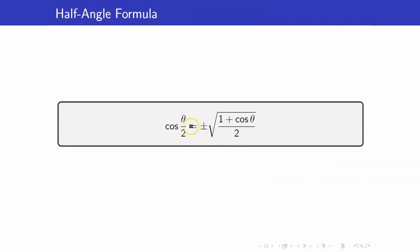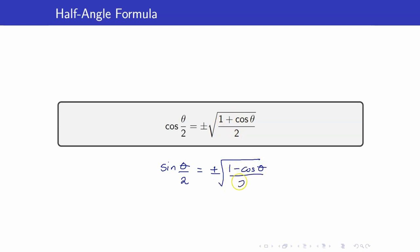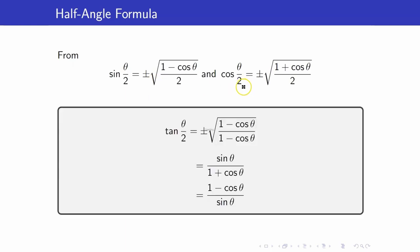Similarly, we can derive that the formula for cosine of theta over 2 is the square root of (1 plus cosine theta) over 2. Notice the only difference between the two formulas is that sine has 1 minus, while cosine has 1 plus. Combining these two, we get the formula for tangent of theta over 2, which is the square root of (1 minus cosine theta) over (1 plus cosine theta). There is also an alternate form that does not involve a square root, which is preferred.